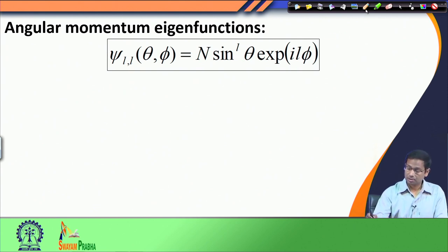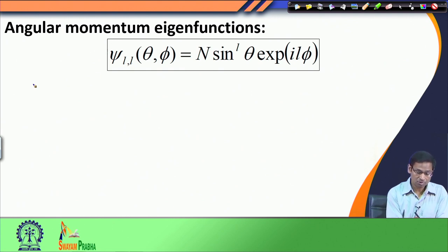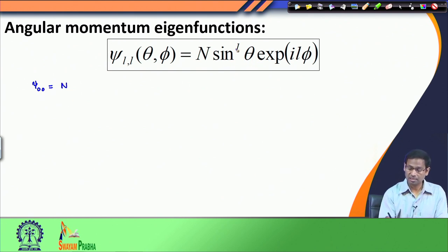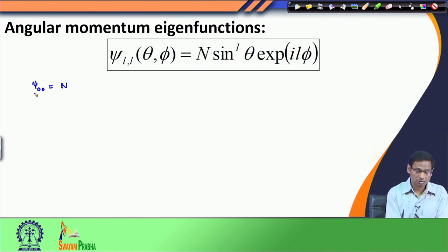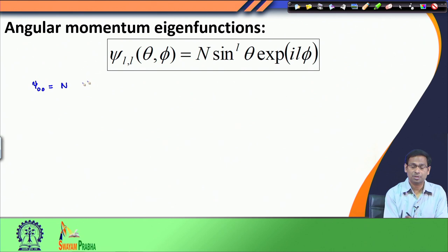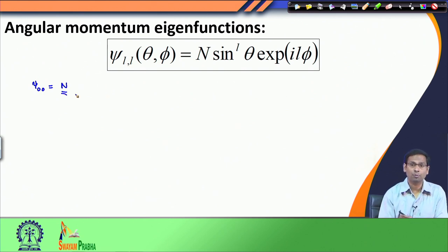Here we would see what happens when l is 0. When l is 0, m is also 0. Therefore, psi_00 is N times sin^l(theta), and since l is 0 this is 1, times e^(i*l*phi), and since l is 0 that is also 1. So psi_00 — the angular momentum eigenfunction corresponding to l equals 0 — is simply N.